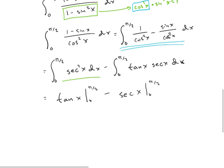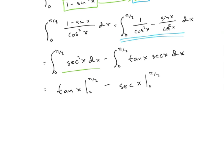So now let's go ahead and look at these. So tangent of x evaluated. We're now going to have to look at some improper limits. So limit as x approaches pi over 2 of tangent of x minus tangent of 0. So tangent of 0 is 0.